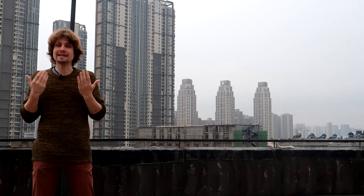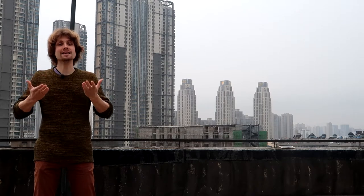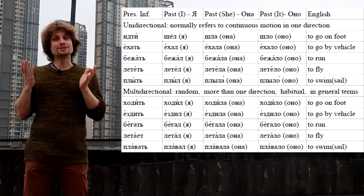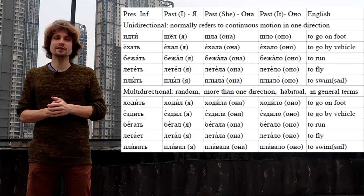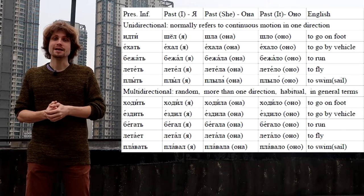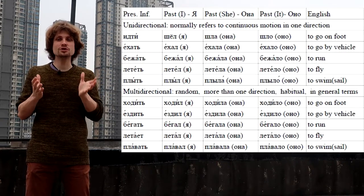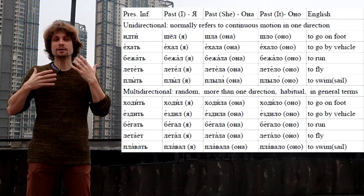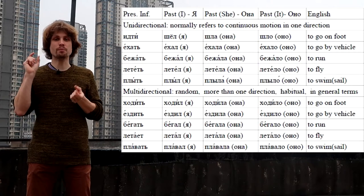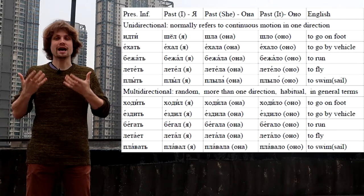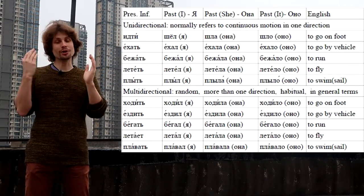Now let's have a look at the next table of these verbs of motion in the present and in the past. Don't be scared — it's much easier than you think. You can find this table just below this video and also some grammar tips in the comment section. But please don't study this table too much; just use it as a visual aid and focus more on the story I'm gonna give you right now. The idea is to watch this part of the video not once but many times until you feel absolutely free to respond to every question easily and automatically. Here we go!